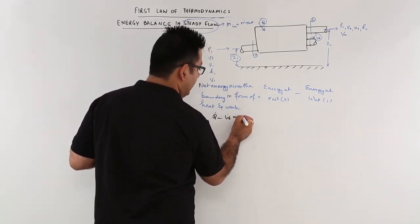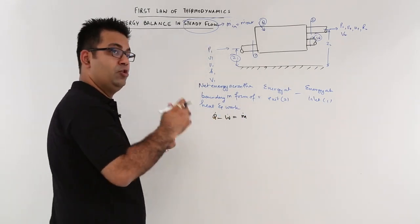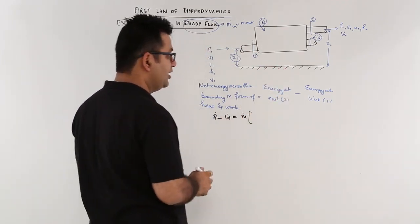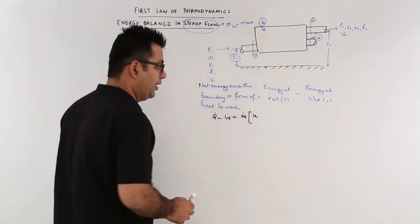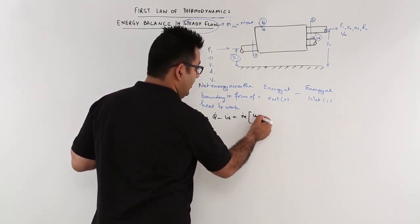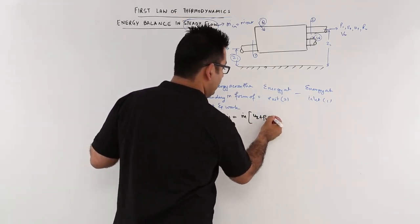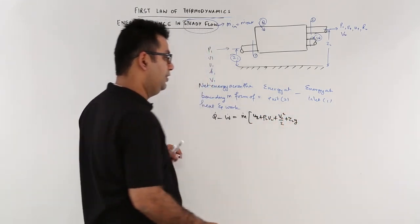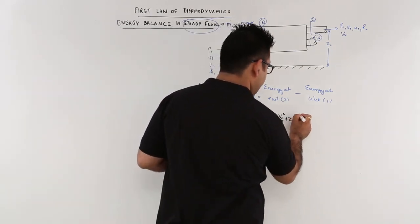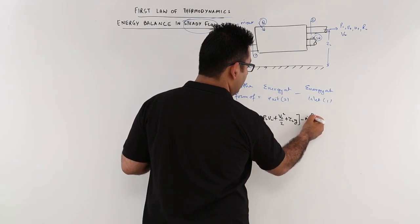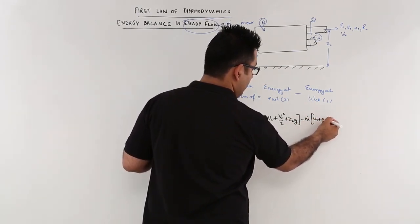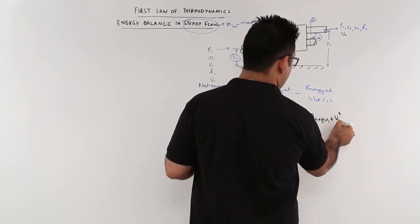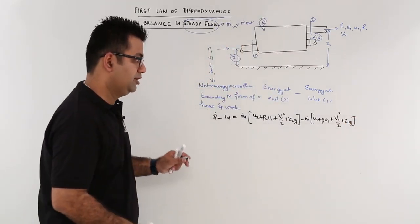The total energy at exit is M dot, because I am assuming M1 equals M2. So I will take M dot throughout. You have energy which is a combination of specific internal energy U2 plus the flow work at exit P2V2 plus kinetic energy V2 squared by 2 plus potential energy Z2G. That is the total energy minus M dot into U1 plus P1V1 plus V1 squared by 2 plus Z1G.